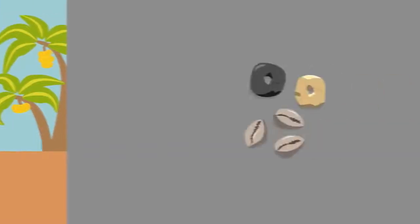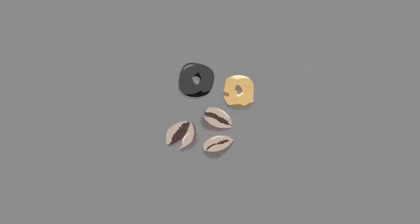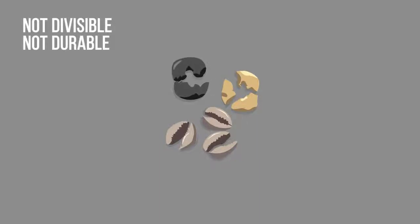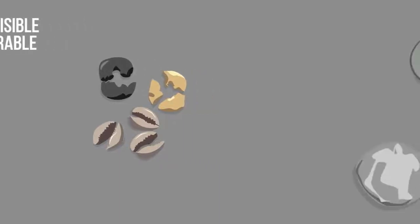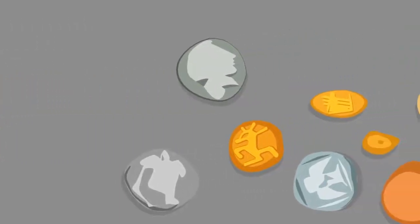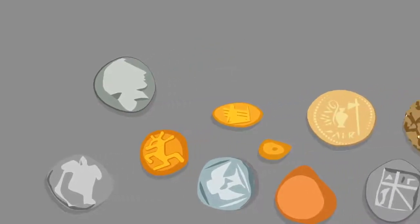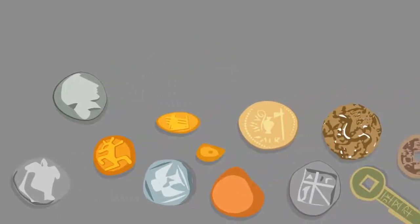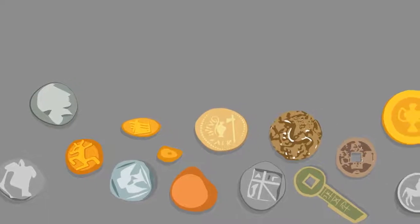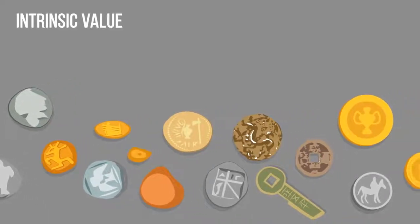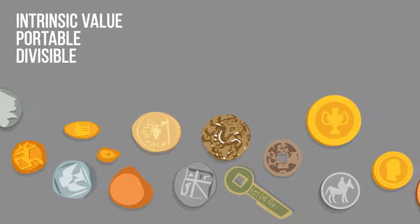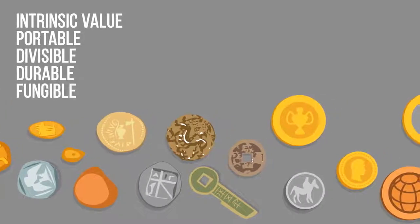Then, there were rocks and shells exchanged for goods, but they were not divisible and durable. It takes hundreds of thousands of years for the precious metals such as silver and gold to come up as a truly transformational form of money that not only has intrinsic value, but is portable, divisible, durable, fungible and scarce.